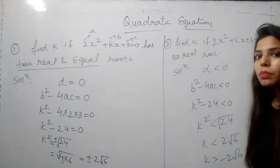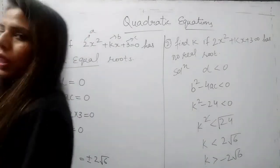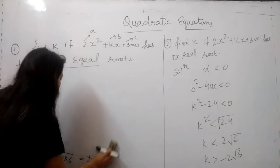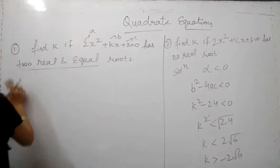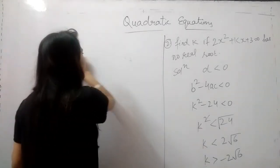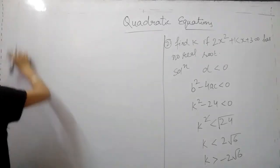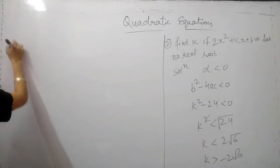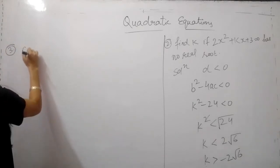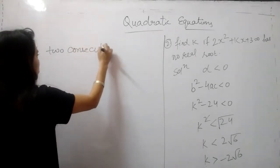So this is how if the nature of the roots is given but any coefficient is missing, this way we can find it out. Now, further moving to the word problems that can be solved using quadratic equations. There are a variety of problems which could be solved using quadratic equations. Out of it, the first category I am going to discuss are the number related problems.